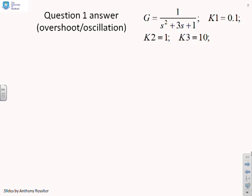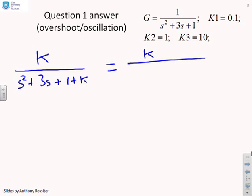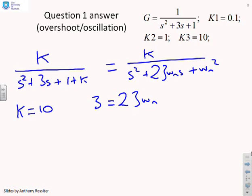Finally, overshoot and oscillation. So again, what I'm going to do is remind you of what we had. The closed loop transfer function K over s squared plus 3s plus 1 plus K. And I can write this as K over s squared plus 2 zeta omega n s plus omega n squared. So if the system is underdamped, then it's worthwhile using this normalized form. Now I know that's only going to happen if K equals 10. So if K equals 10, I'm going to end up with 3 equals 2 zeta omega n and 11 equals omega n squared.